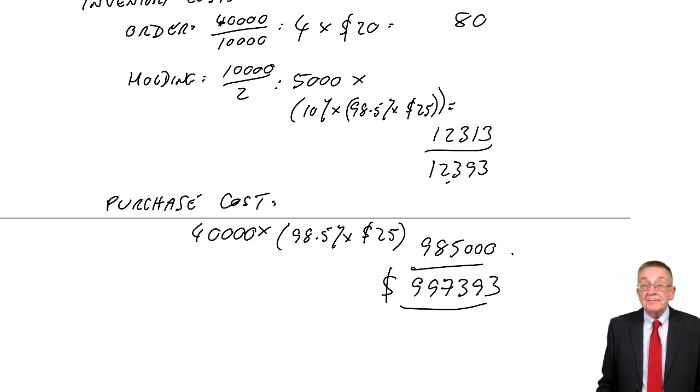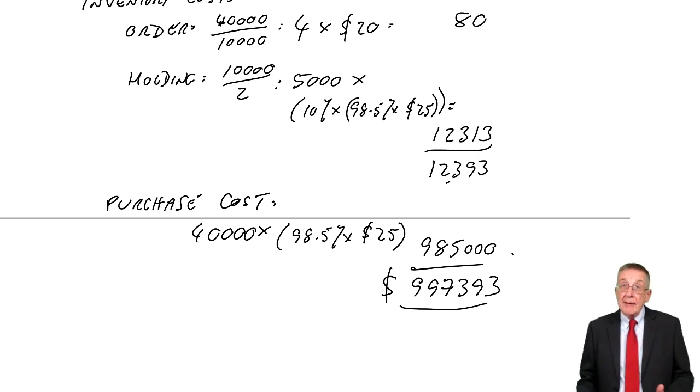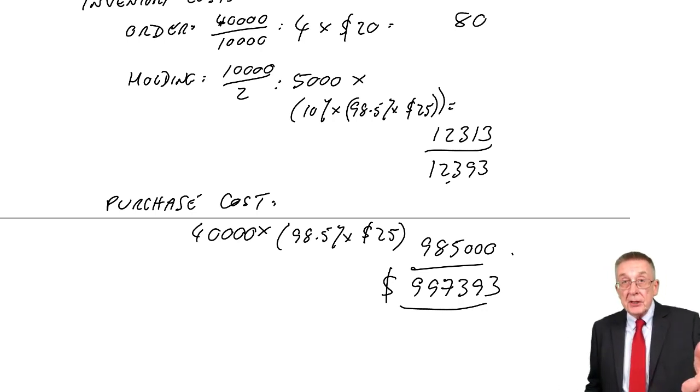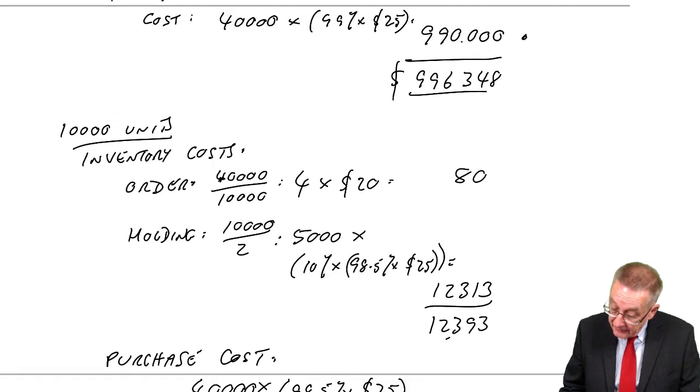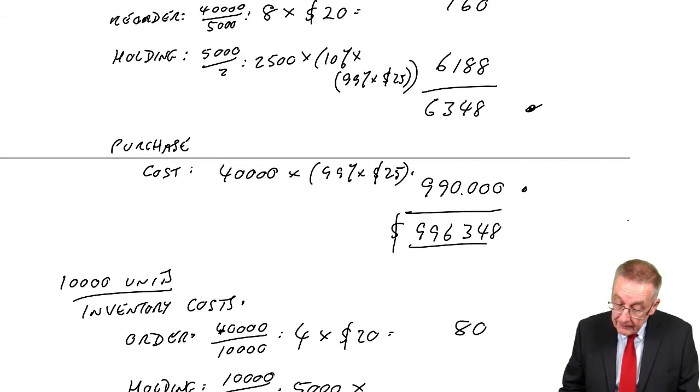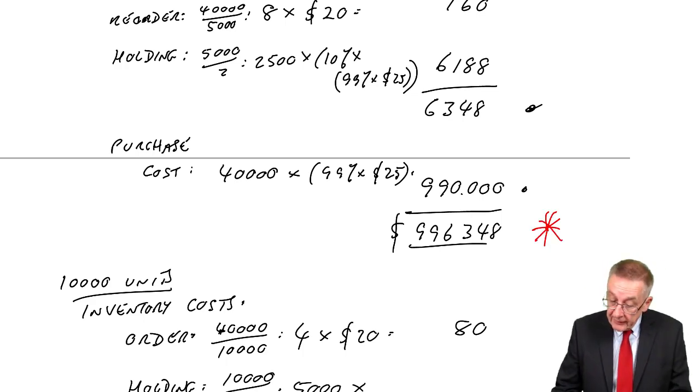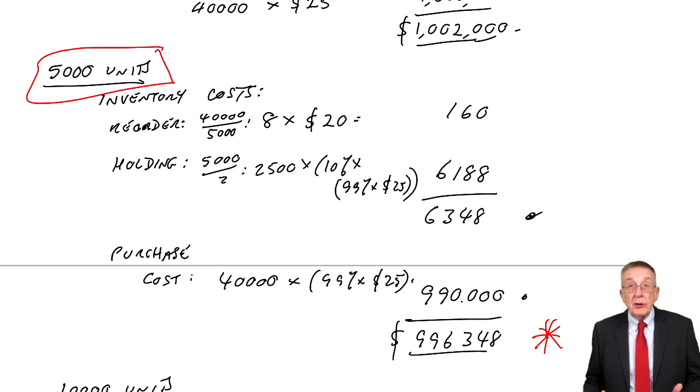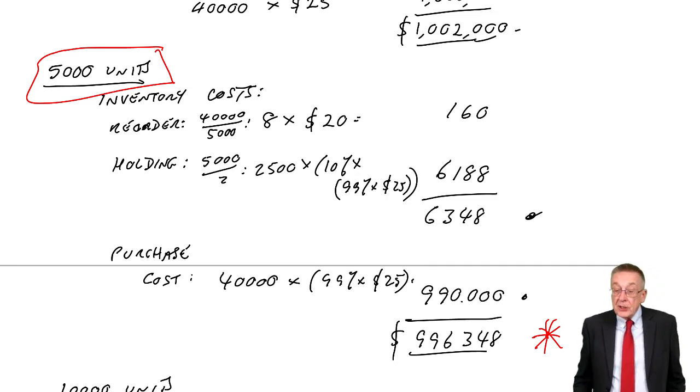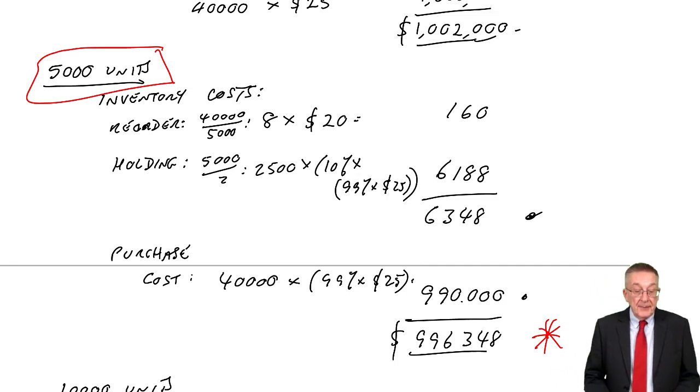And as I explained a few minutes ago, it's only those three levels that are worth considering: economic order quantity and the levels at which we first get higher discounts. Here, 5,000 and 10,000. One of those three has to be the best. And it could be any one of the three. What is it here? $1,002,000, $996,348, $997,393. It's this one. Which was 5,000 units. I'll say it could be any one of the three. There's no quick way. There's no choice but to cost out each of the three alternatives.